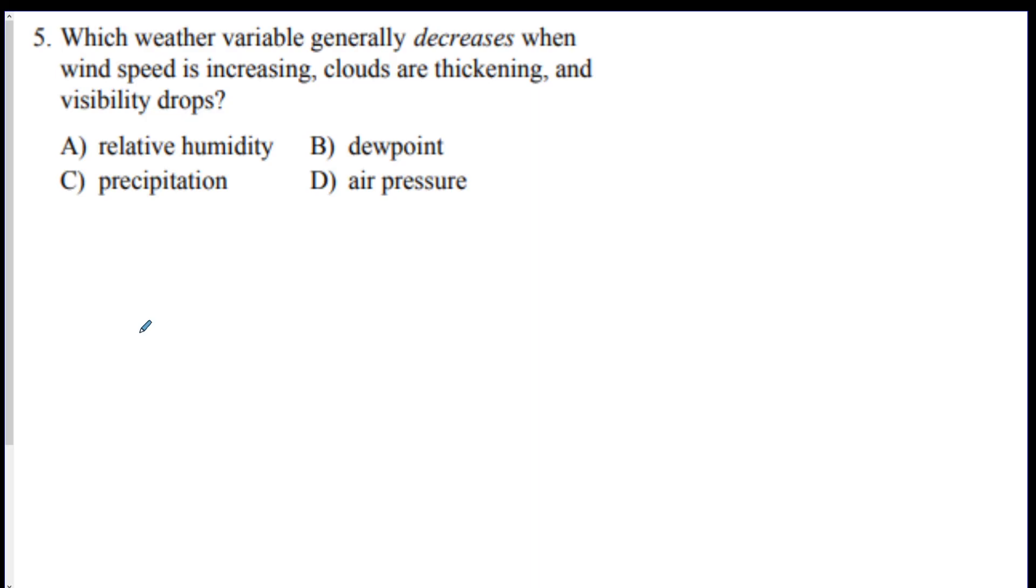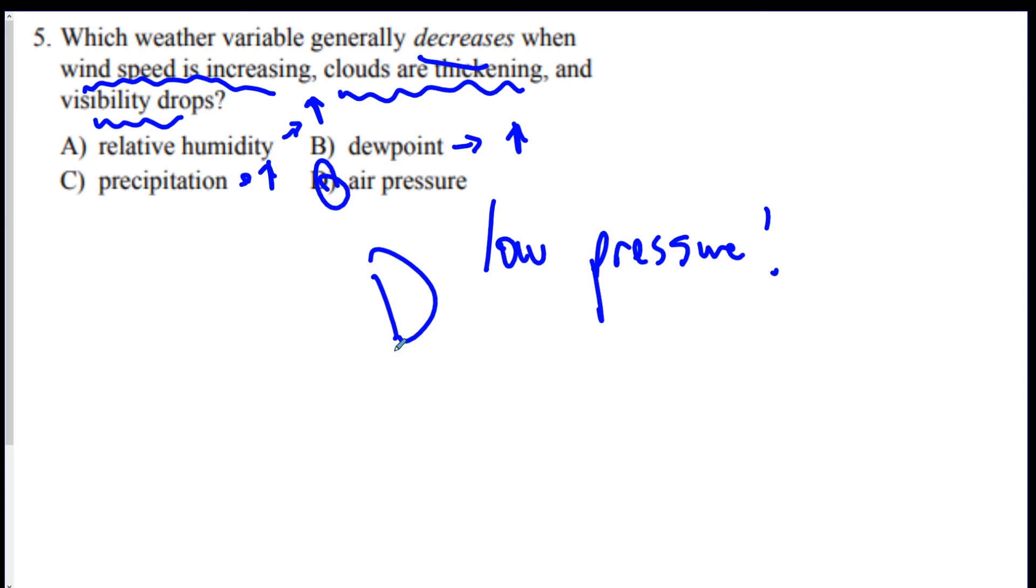Number five. Which variable generally decreases when wind speeds increasing? So it's getting really windy outside. There's a lot of clouds and visibility drops. It's hard to see. So which one is generally going to go down? Dew point is the measure of moisture, so this is going to go up. Relative humidity, that's if it's a high amount. You're going to have a lot of moisture, a lot of clouds. So that's going to go up. And it looks like by this, if there's a lot of clouds and wind speed, precipitation will probably start to go up. And this is all characteristics of low pressure. D. Air pressure should drop. Low pressure is lousy, cloudy, stormy.